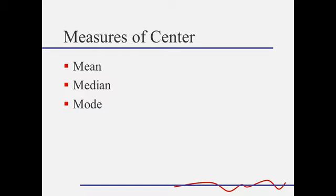In this video, I'm going to talk to you about the three measures of center that we will use in this course: the mean, the median, and the mode. These three measures are computed exactly the same way you learned to compute them back in elementary school. For the mean, you're going to add up all the values and divide by the number of values that you have. The median is the value in the center of the data set when the data set is in order, and the mode is the value that occurs most often.